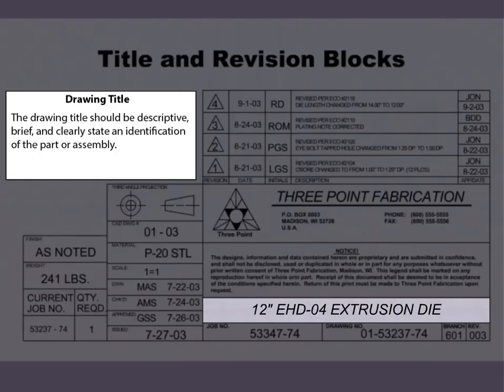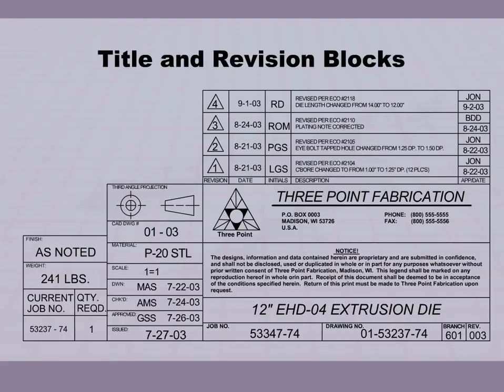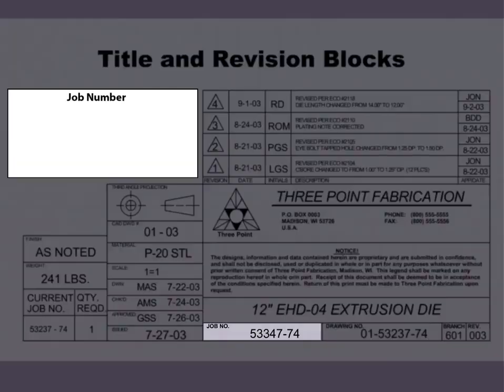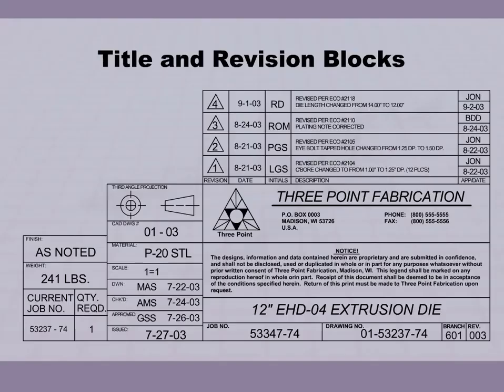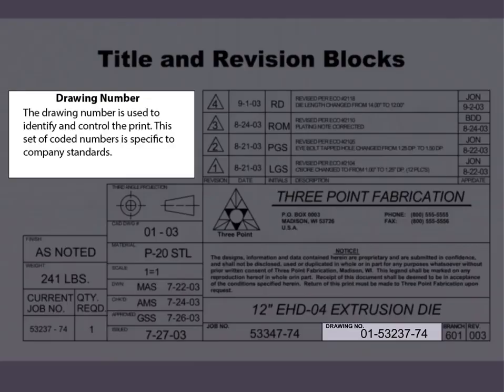The drawing title should be descriptive, brief, and clearly state an identification of the part or assembly. The job number is used to designate the total set of drawings. The drawing number is used to identify and control the print. This set of coded numbers is specific to company standards.